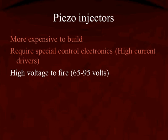The voltage to fire each injector is going to be somewhere between 65 and 95 volts. That doesn't mean it alternates — different manufacturers have designed their piezo injectors to open at different voltage levels. When there are multiple injection events, the first one is going to be on the lower voltage.